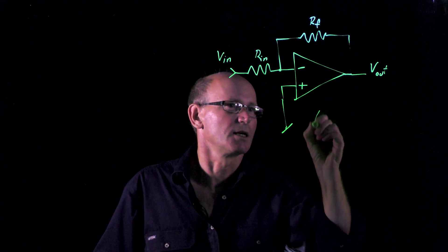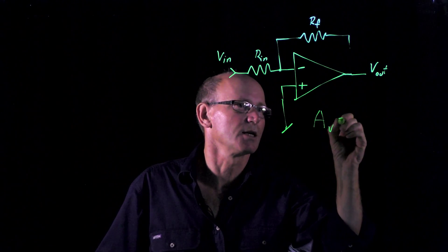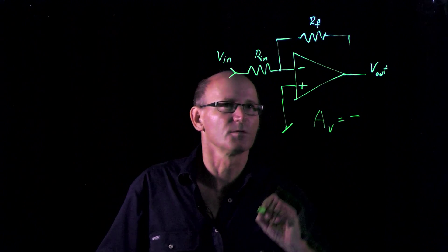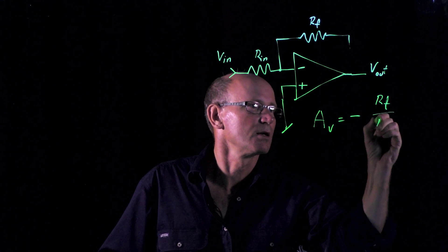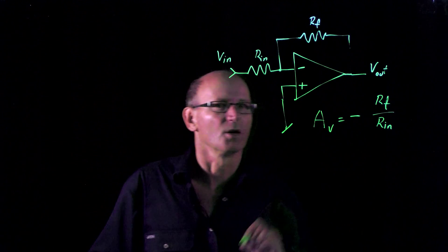Our basic gain equation for voltage gain is negative because it's inverting RF over R in.